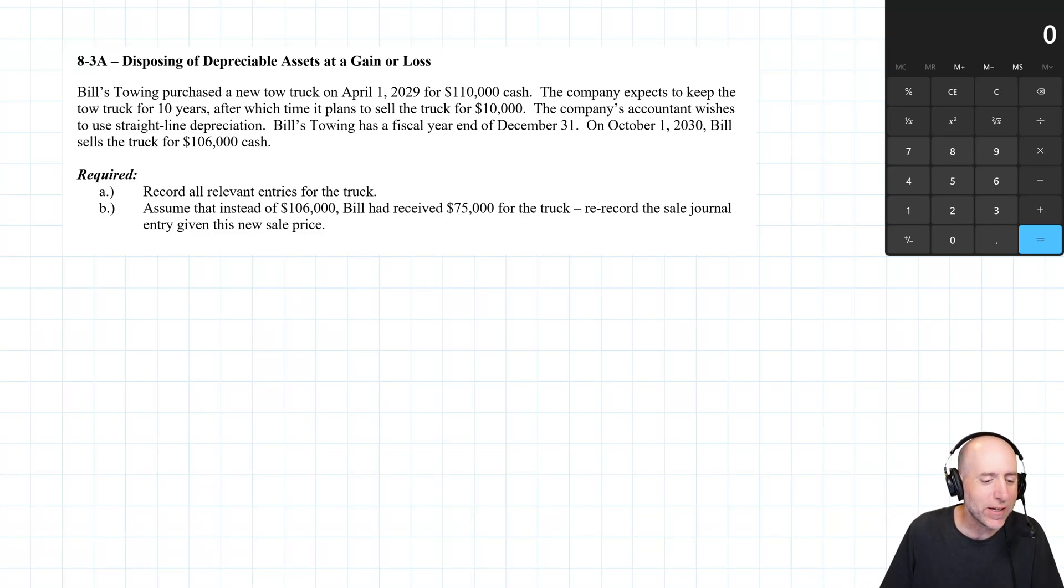Let's have a run through problem 8-3-A, disposing of a depreciable asset at a gain or loss. When it comes to midterm exams, midterm two of my class, I love asking problems like this, often using straight line depreciation as we do in this question, but also units of production and double declining balance. The reason I like it is because it tests students on can they do depreciation journal entries, and it also tests them on what happens when they sell an asset and get more money than they were planning for, or less. It's a great type of problem, highly recommend you practice these.